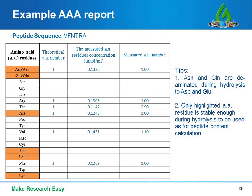Therefore, only the highlighted amino acids in the table that are stable enough during acid hydrolysis and are highly recovered from HPLC are utilized for net peptide content calculation.